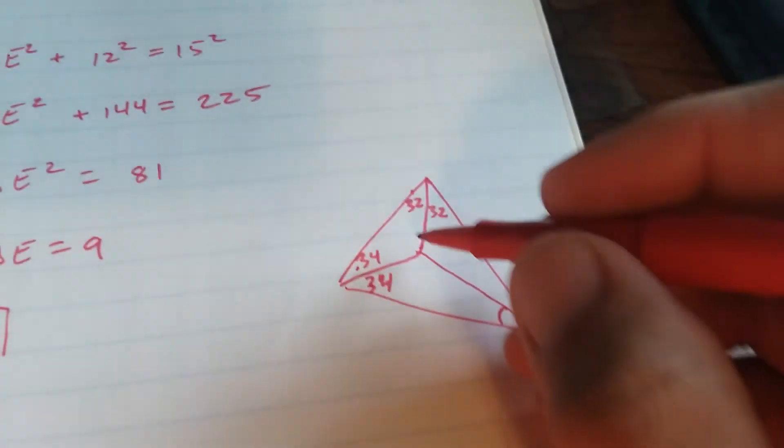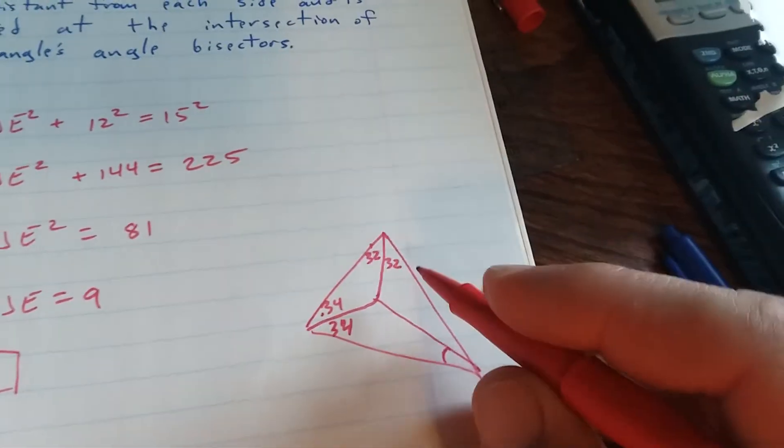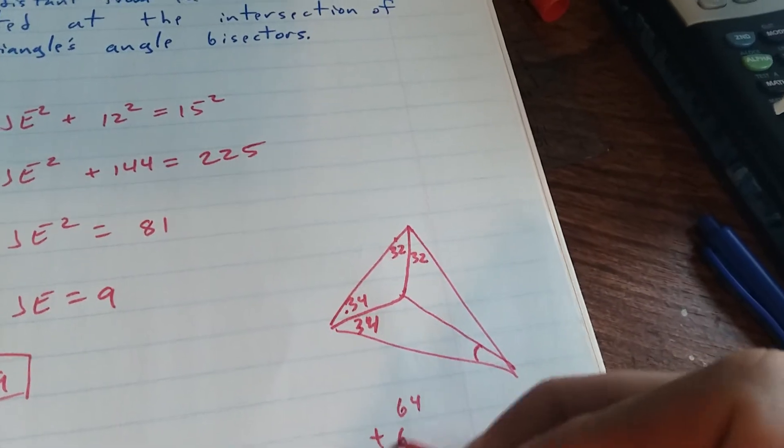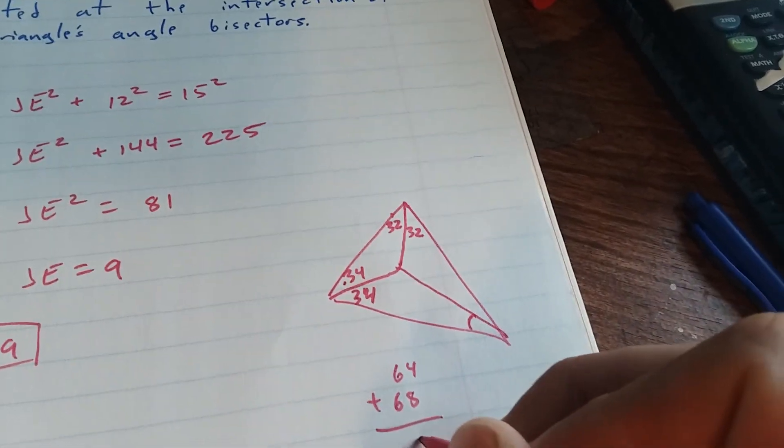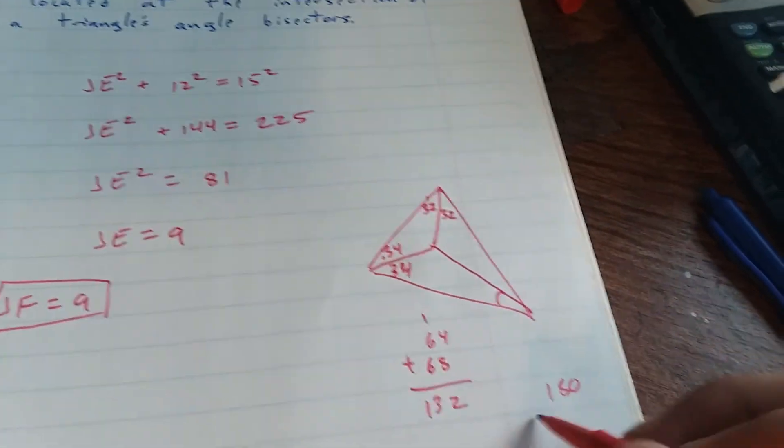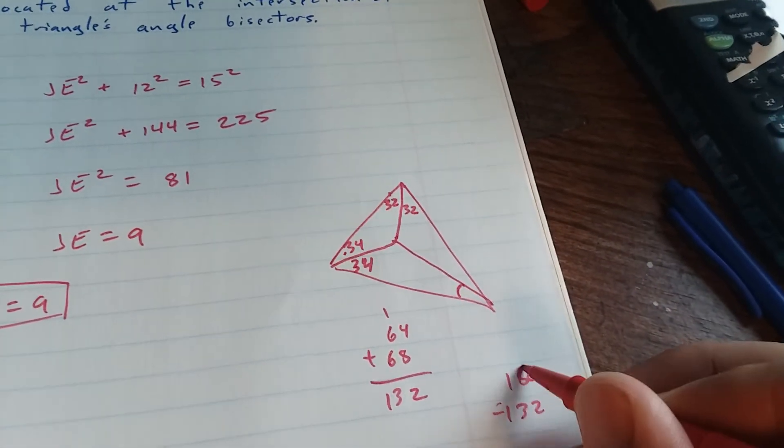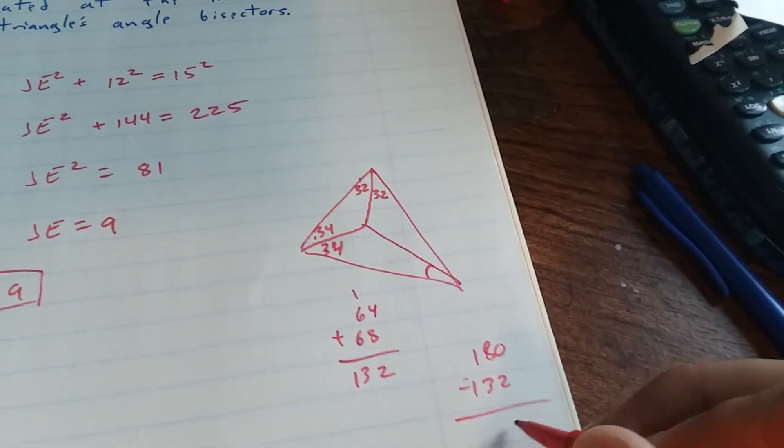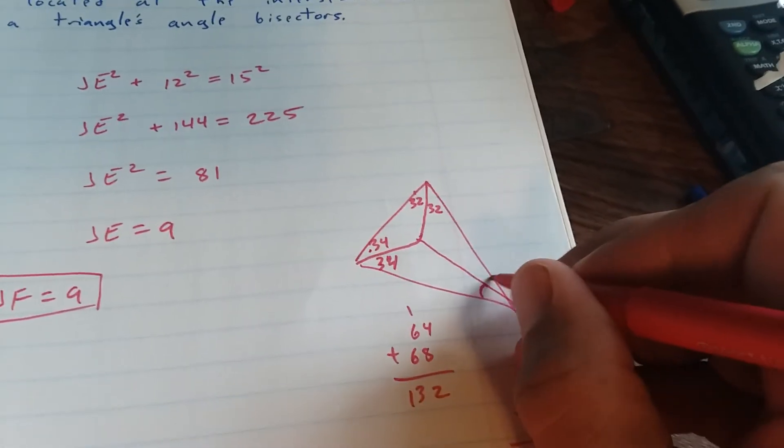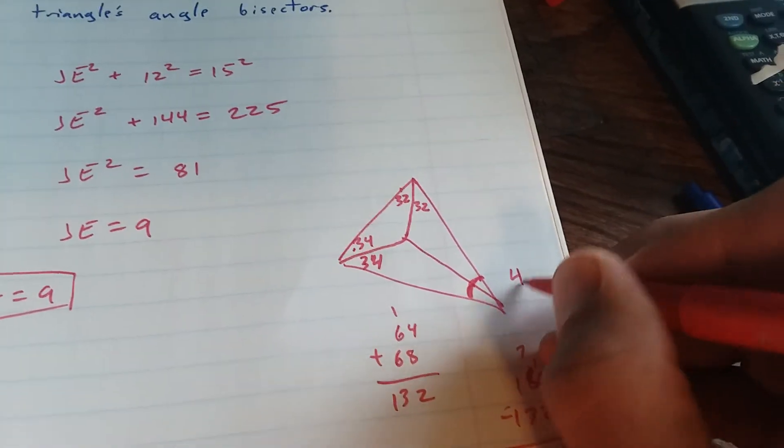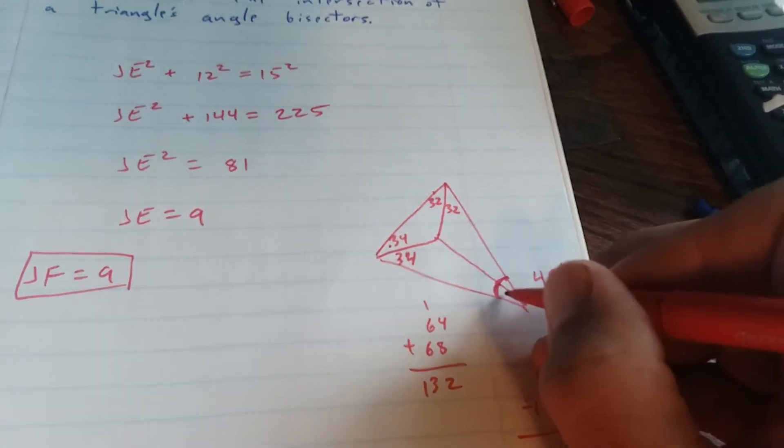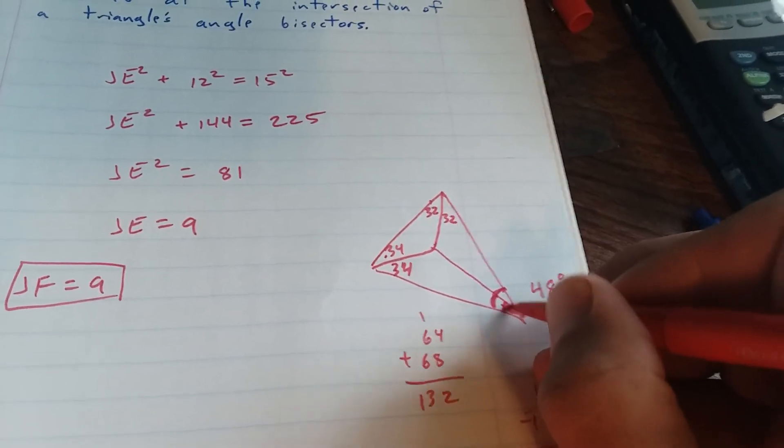Well, we have a big triangle here, so we're gonna find the measure of that. 32 and 32 is 64 and 68. 132, we do 180 minus 132. This entire angle here is 48 degrees. We want the measure of this little angle here. That little angle,